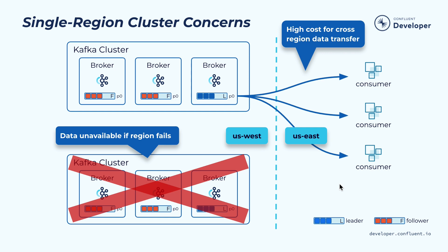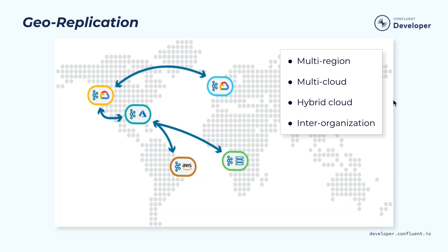The second reason is for local affinity. If you only have data in one region, you may have some other consumers in other data centers that are a bit further apart. Letting all those applications independently pool remote data can stress that limited cross-data-center bandwidth. So it's much better to pool data once into a remote region and then serve that data locally. These are two common reasons why you need geo-replication, and with geo-replication we can solve these needs much better.